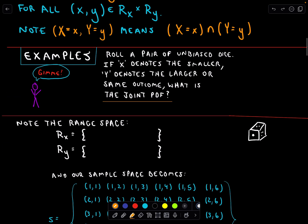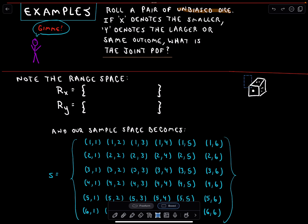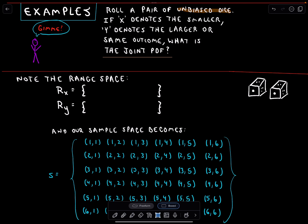The first example involves dice — maybe it feels a little contrived, but hopefully the second one will clear things up. All we're going to do in these next two examples is simply create these joint PDFs. We're going to roll a pair of unbiased, fair six-sided dice. X is going to denote the smaller of the two numbers observed, and Y is going to denote the larger. If they're tied, that's okay too. We want to know what is the joint PDF.